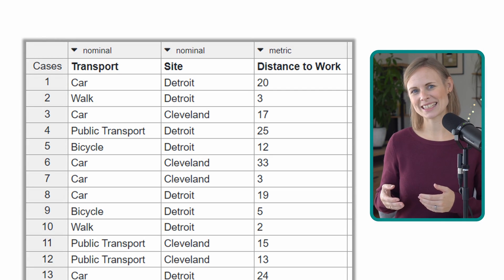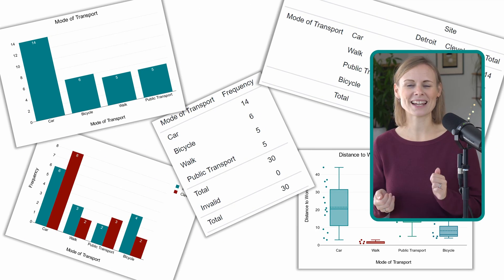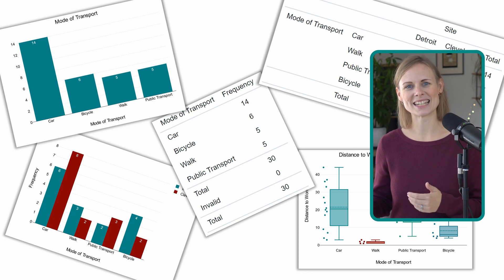Hi, in this video we're going to talk about descriptive statistics and I'm going to explain the four key components in a simple way. Let's say a company wants to know how its employees travel to work, and so the company creates a survey to answer this question. Once enough data is collected, this data can be analyzed using descriptive statistics.